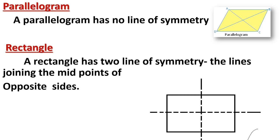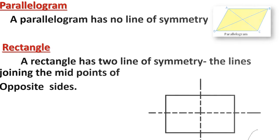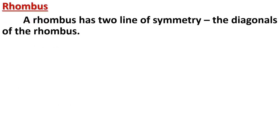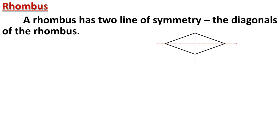Next is the rhombus. A rhombus also has two lines of symmetry. The diagonals of the rhombus — when two opposite vertices are joined — form one line of symmetry each. By joining both pairs of opposite vertices, a rhombus has two lines of symmetry.